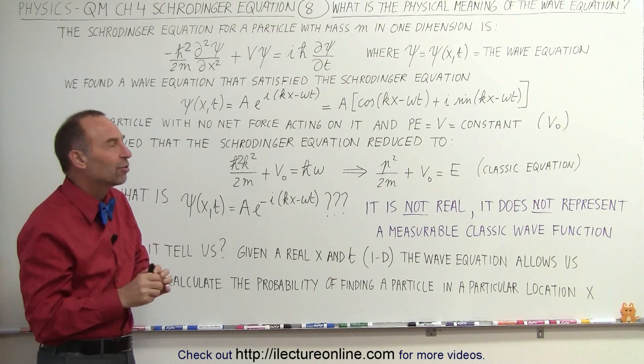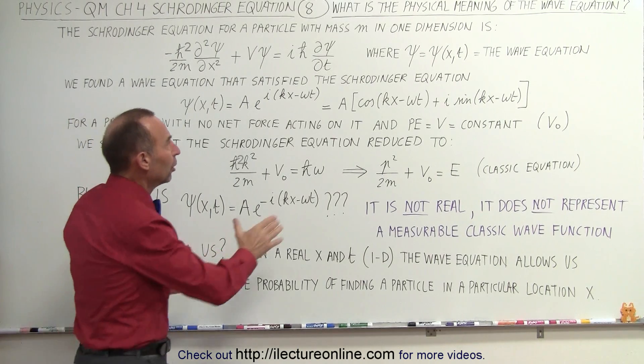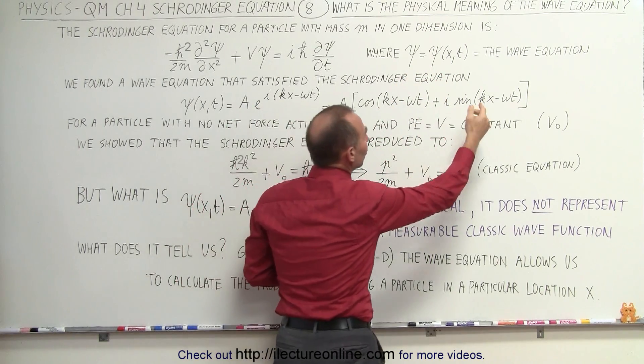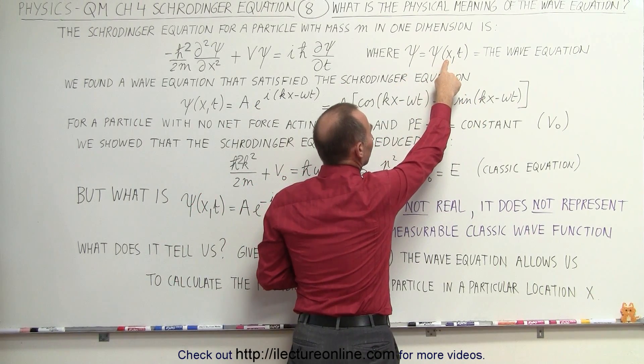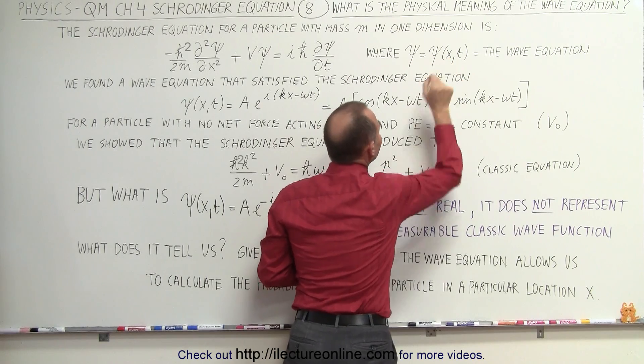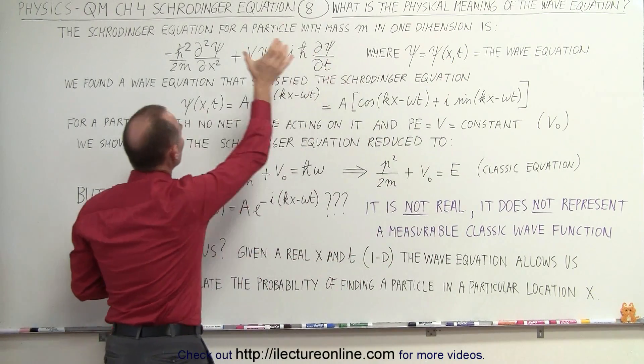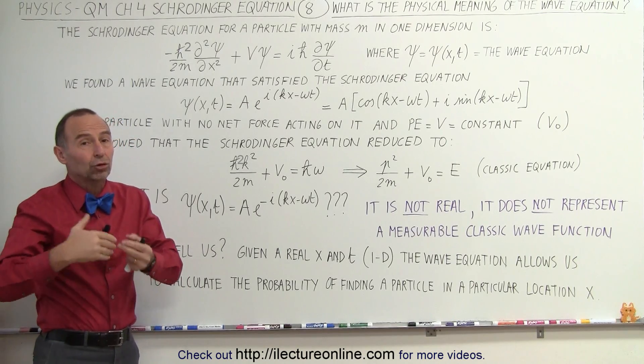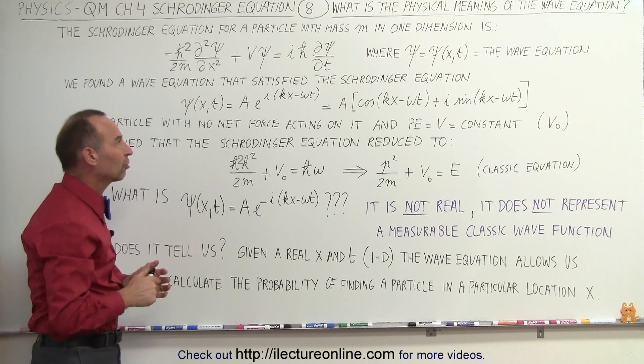So how does a wave equation play a role? First of all, the wave equation, which is written like this, in this case, since we're dealing with a one-dimensional case, is a function of position and time. And when we plug that into the Schrodinger equation, it should satisfy that Schrodinger equation, just like a solution should satisfy a differential equation.